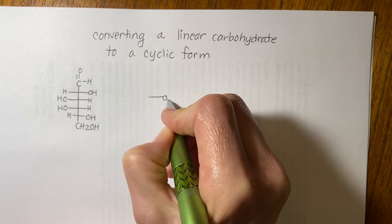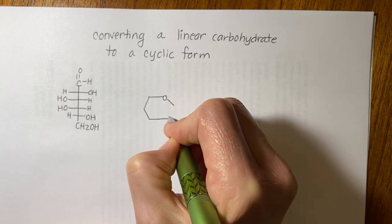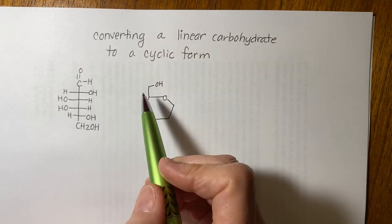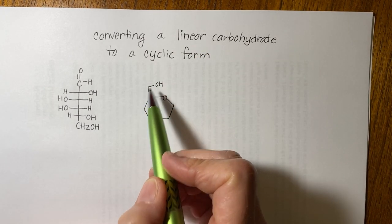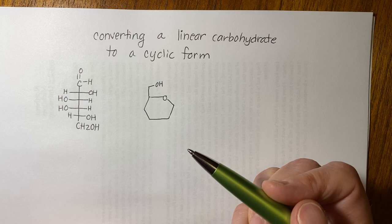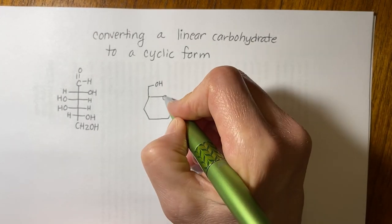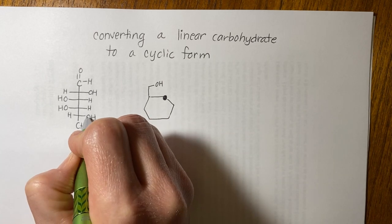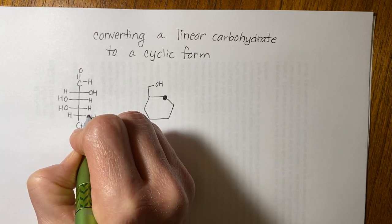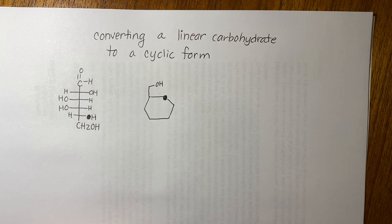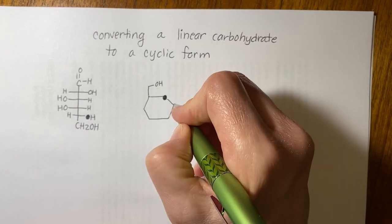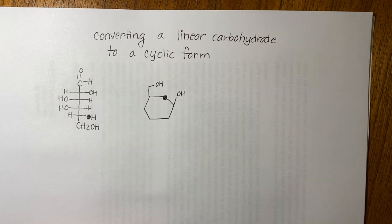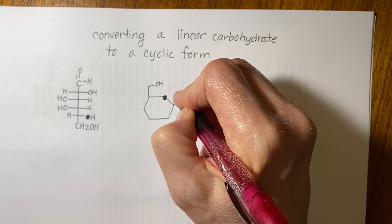When you have a D sugar and it's an aldo hexose, which is the most common, you get a ring that's a six-membered ring. Carbon six is always at the top left corner for a D sugar — that's basically a given. Then this oxygen that's colored in is this oxygen on the ring.